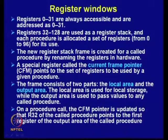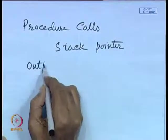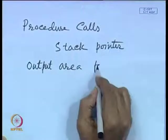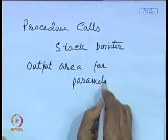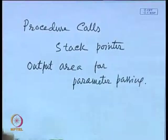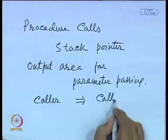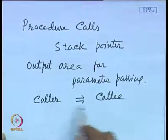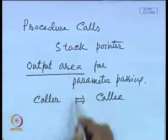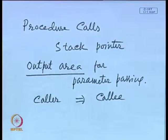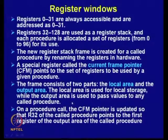The frame consists of two parts: the local area and the output area. The local area is used for local storage, while the output area is used to pass values to any called procedure — that is, it is used for parameter passing from caller to callee.